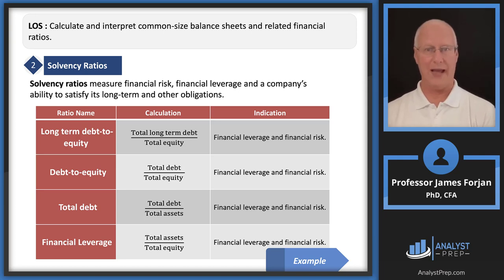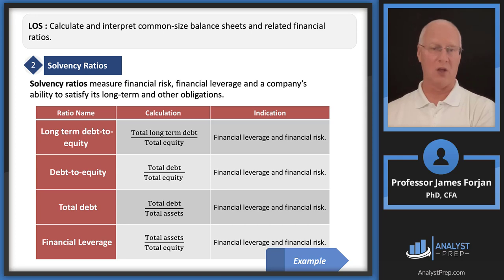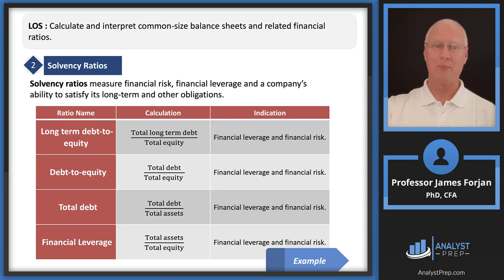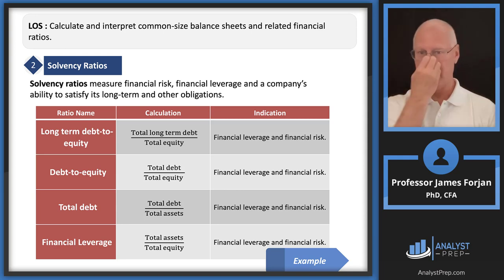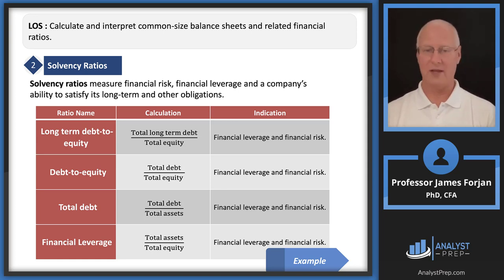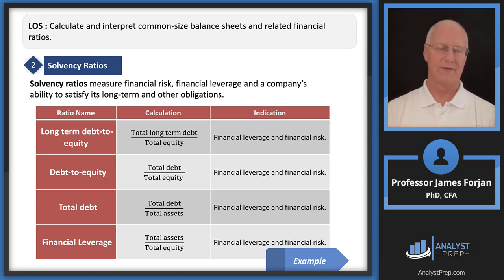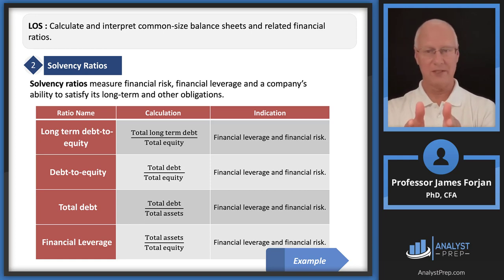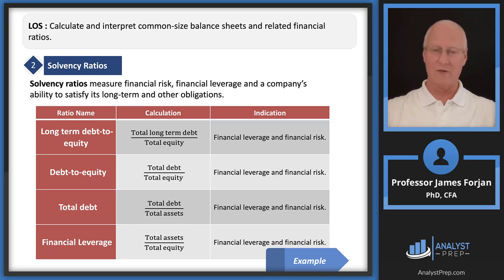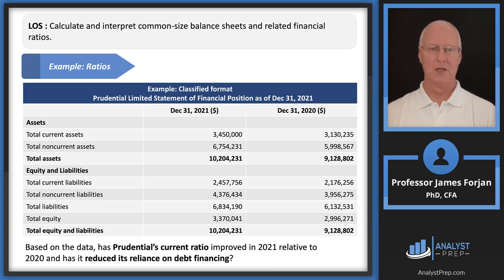Solvency ratios ask how quickly a firm can turn assets into cash to meet long-term obligations — also called leverage ratios. These include long-term debt to equity, total debt to total assets, and financial leverage. The indications tell us how much debt is in the capital structure; higher debt increases bankruptcy or insolvency risk. We put these in numerators and denominators to get relative terms for comparison.